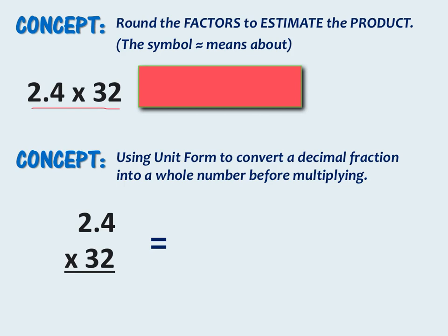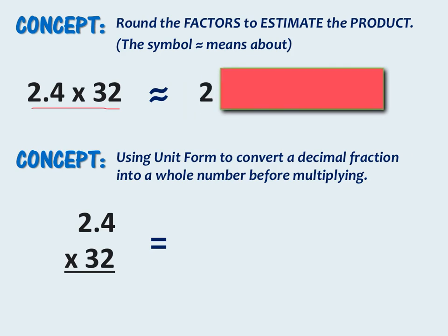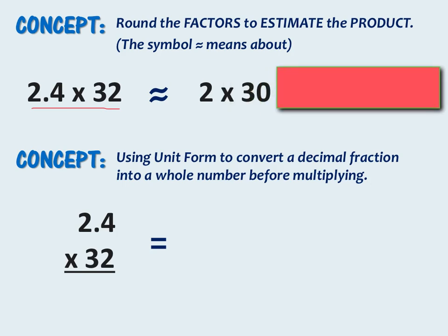We know that 2 and 4 tenths is approximately or about 2. So we show that by using this squiggly line symbol. This symbol means about. So 2 and 4 tenths is about 2, and 32 is approximately 30. So if we look at our factors, we see that we have about 2 times 30, and we know that 2 times 30 is 60. So our answer should be something close to 60.